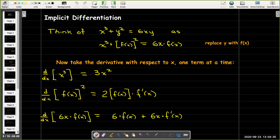And with the third term, 6x times f(x), that is a product. 6x is a function, f(x) is a different function, so I need to use the product rule. The derivative of the first is just 6 multiplied times the second, which is f(x),